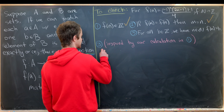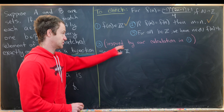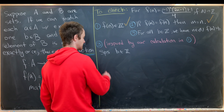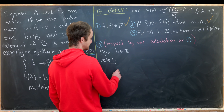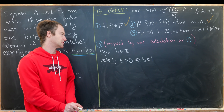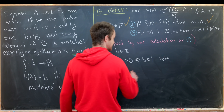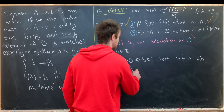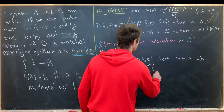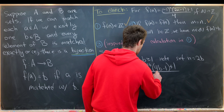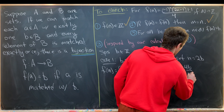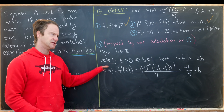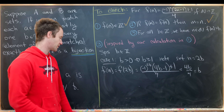We split into two cases. Case 1: if b ≥ 1, set n = 2b. Then f(2b) = (-1)^(2b)(4b - 1) + 1 all over 4 = 4b / 4 = b. So we found a pre-image for b when b is positive, inspired by our calculation in part one.